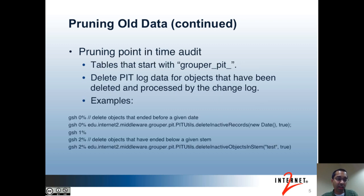The next type of old data that you may want to delete is point-in-time audit. The point-in-time audit allows you to query the state of Grouper at a specific point in time or a date range in the past. I already covered how this can be done using the obliterate-stem-gsh command, but here's another method along with more information. Point-in-time audit in Grouper is stored in the tables that have names starting with grouper_pit_. In Grouper 2.1, there are 14 of these tables. Audit data can be deleted from point-in-time if the associated objects have been deleted and processed by the changelog daemon. The first example is to delete point-in-time data based on a date using the current time, so all objects deleted before the current time would get deleted from point-in-time. You can specify a date in the past if you want to delete point-in-time data for objects deleted before some date in the past.